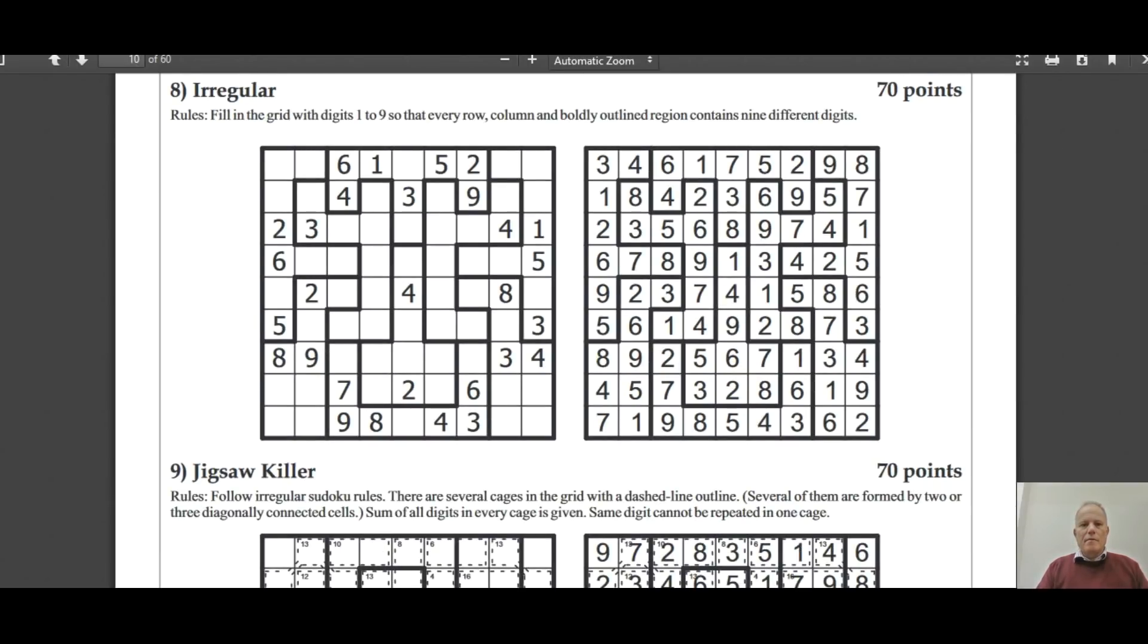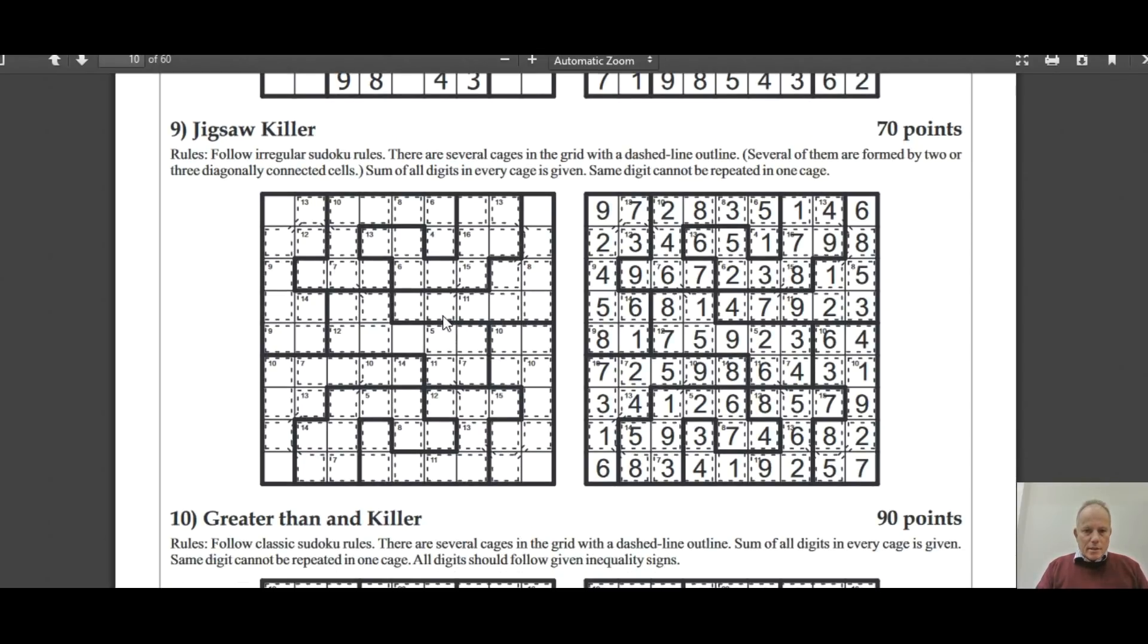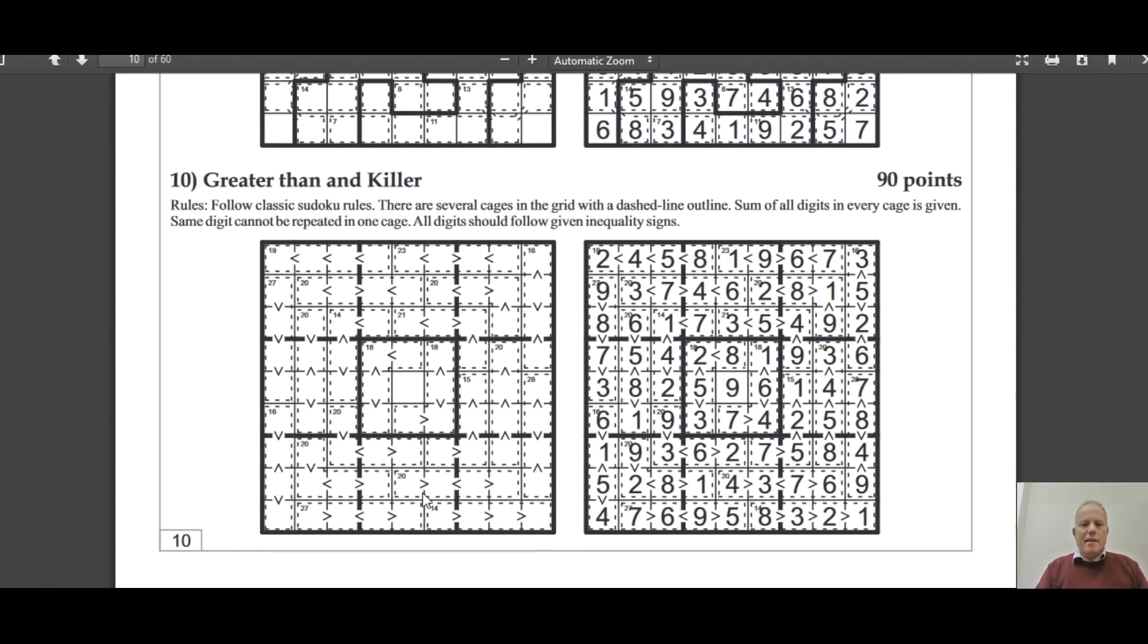This one's a bit of a classic variant as well - Irregular. You don't have three by three square boxes, you have odd shapes in which all the numbers one to nine will be contained in each one. Then there's Jigsaw Killer, which has cages like a killer and it's got odd shapes like an irregular. And then finally, Greater Than and Killer, which is a bit like the greater than killers that we've been solving from Daily Killer Sudoku, but here there are greater than signs within the cages, so it's not each value, it's comparing the number values within the cages.